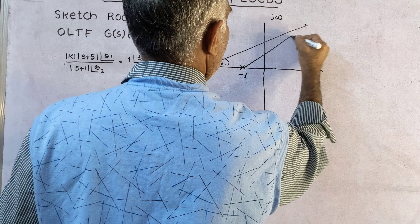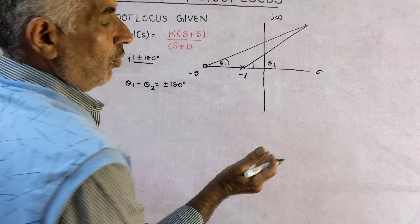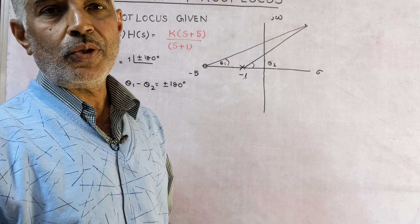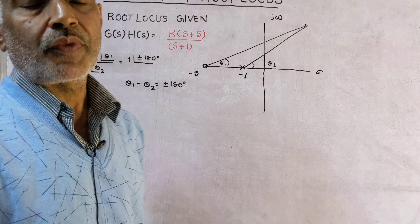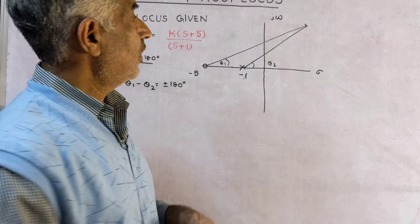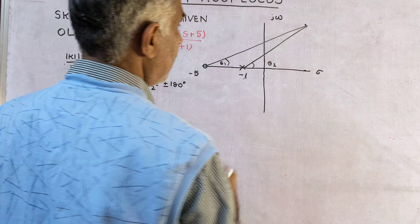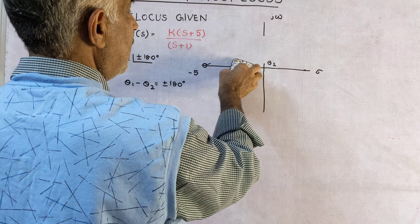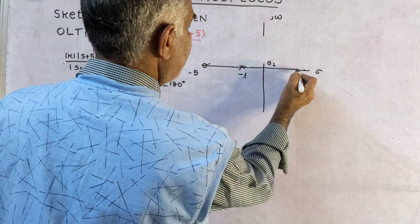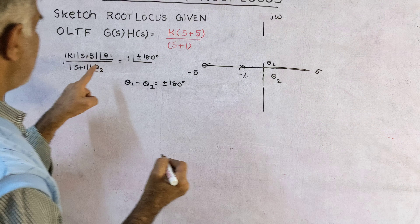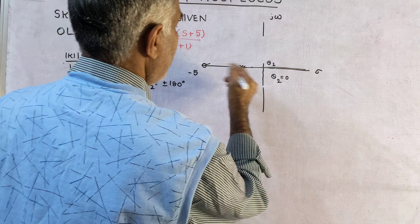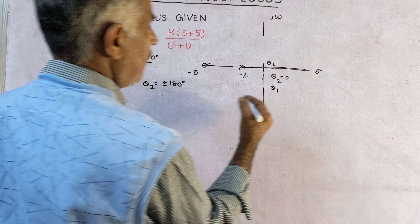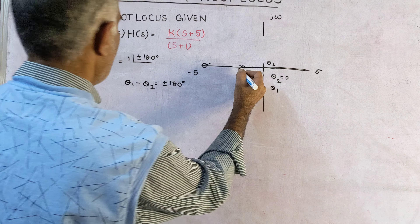Now take trial points. Before that, I will rearrange: mod k times mod(s plus 5) at angle theta 1, divided by mod(s plus 1) at angle theta 2, is equal to 1 at plus or minus 180 degrees. So mod of k times G(s)H(s) equals 1, and angle of k times G(s)H(s) equals plus or minus 180 degrees.